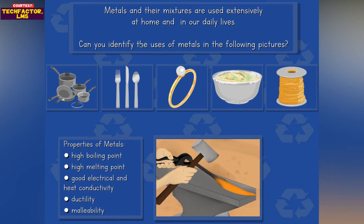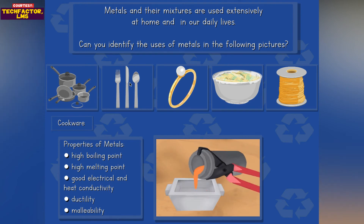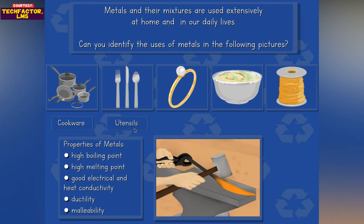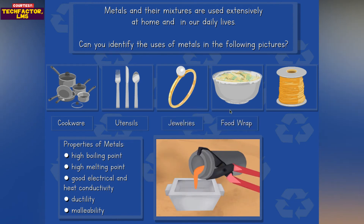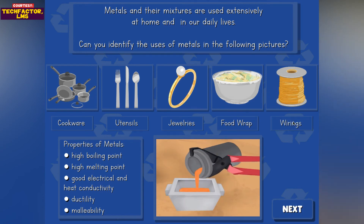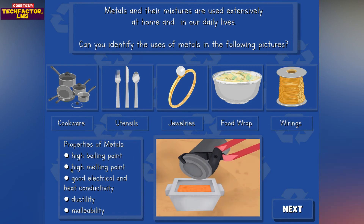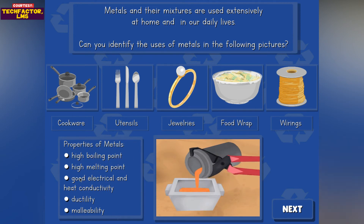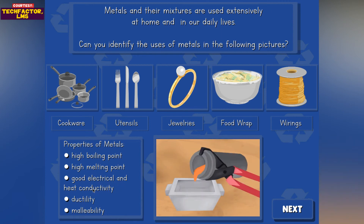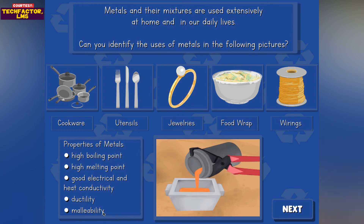Can you identify the uses of metals in the following pictures? Cookware, utensils, jewelries, food wrap, and wirings. The properties of metals include high boiling point, high melting point, good electrical and heat conductivity, ductility, and malleability.